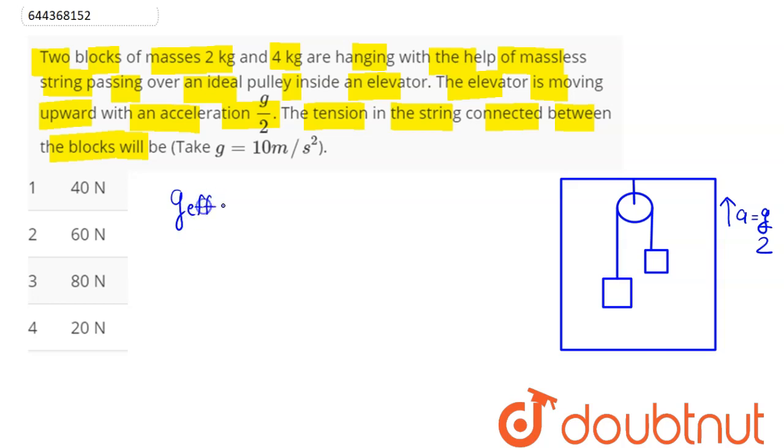Hence the net acceleration will be equal to, here g effective will be our g as well as g by 2. So here we can say pseudo force acts on both blocks downward with g plus g by 2.